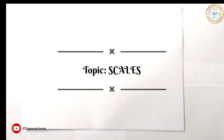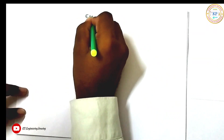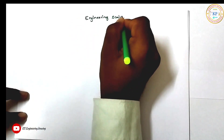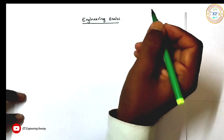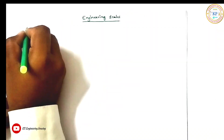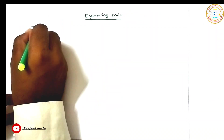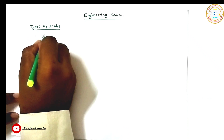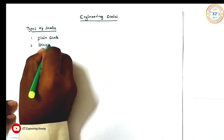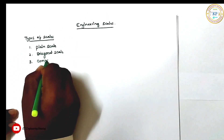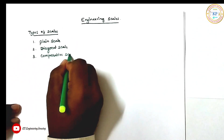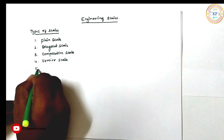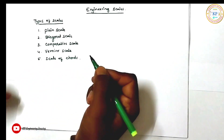Before we start the topic, please do like, share and subscribe my channel. Engineering Scales — we have different types of scales. They are Plain Scale, Diagonal Scale, Comparative Scale, Vernier Scale, and Scale of Chords.